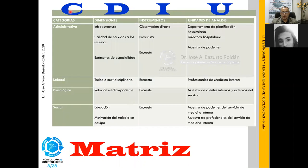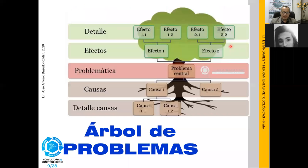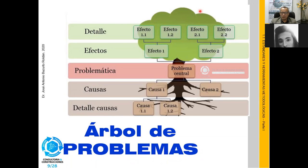Hablamos de matriz CDIU porque ese es el nombre que se da a esta técnica. Es una de las primeras herramientas que me permite identificar los problemas de manera ordenada y establecer las preguntas para una encuesta de forma lógica. La C es la columna de categorías, la D de dimensiones, la I de instrumentos y la U de unidades de análisis. Transversalmente pongo una categoría y voy dando las dimensiones, instrumentos y unidades de análisis.